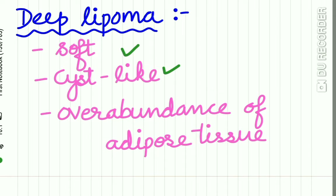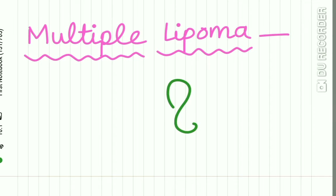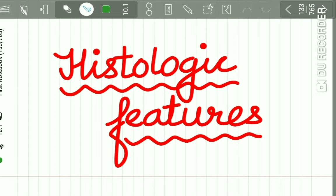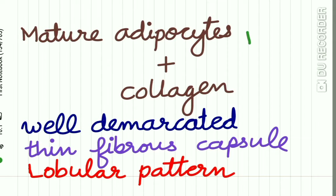Conditions where multiple lipomas can be found include neurofibromatosis, Gardner syndrome, encephalocraniocutaneous lipomatosis, multiple familial lipomatosis, and Proteus syndrome. Regarding histologic features, lipoma is made up of mature adipocytes and collagen fibers.